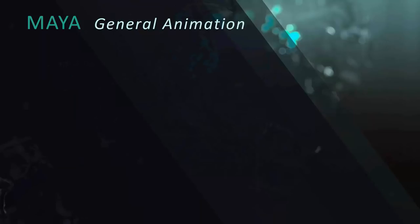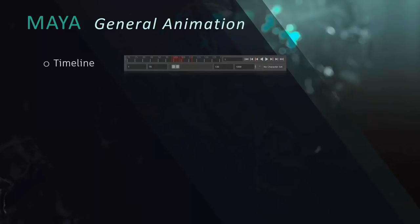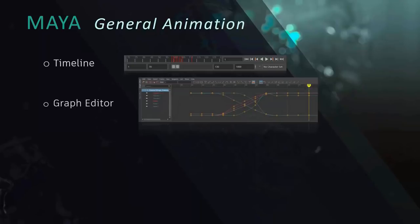For general animation, the editors we're going to cover: obviously the timeline — the most basic window into time — allows you to scrub time, play back, set your frame rate, and do some basic key movement and editing, retiming and things like that. At a more granular level, we have the graph editor, where we can actually get down into the nitty-gritty and move keyframes around and change tangencies to change the rate of individual curves.